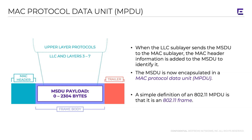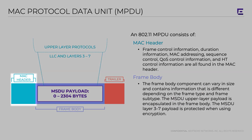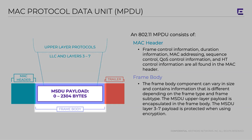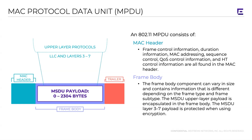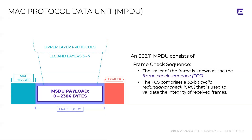Your MAC protocol data unit consists of the MAC header — and we'll have videos talking specifically about the MAC header — it consists of the frame body, which is your MSDU, the payload that came from the higher layers. It's effectively the IP packet, and it can be as big as 2304 bytes. It also has a trailer called the frame control sequence, which is a redundancy check.